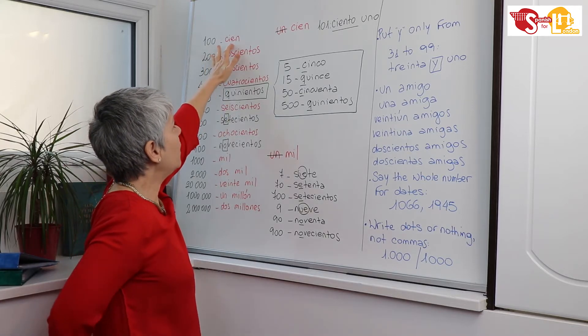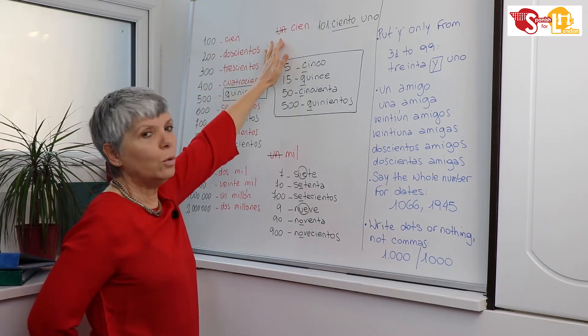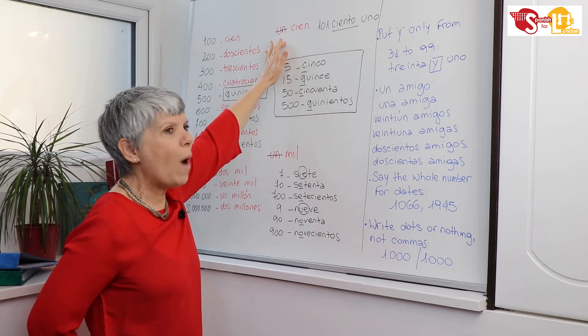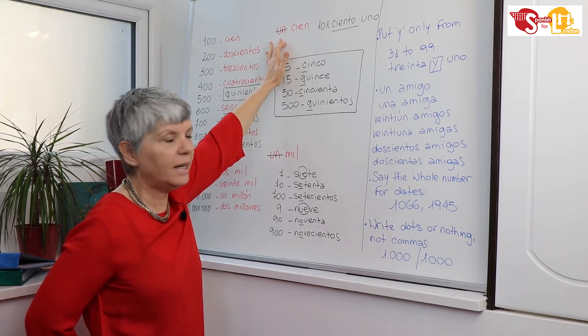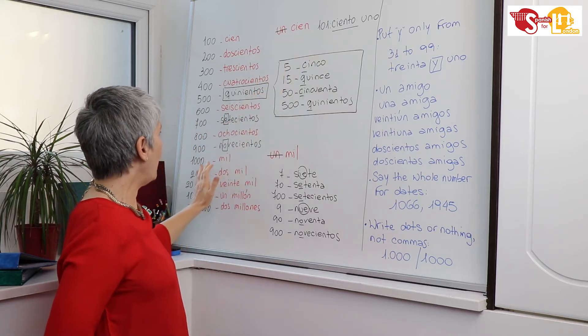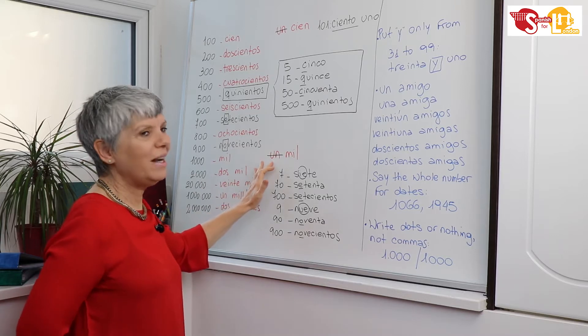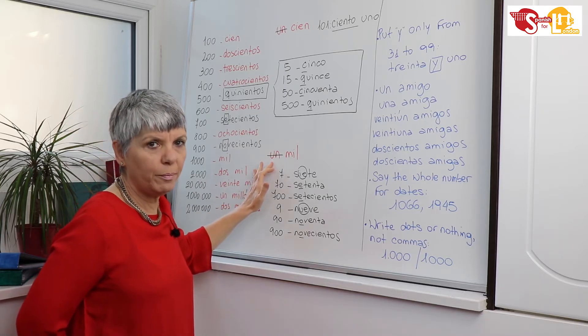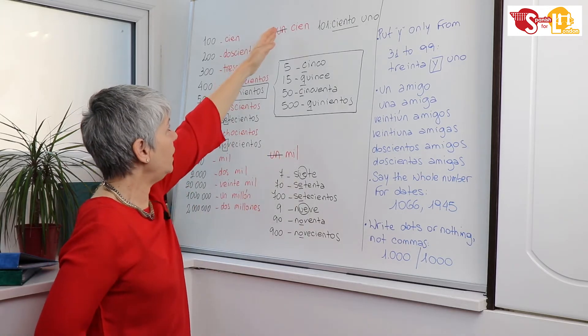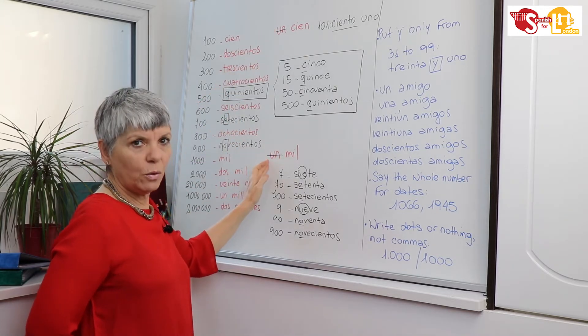100, cien. We never say un cien in Spanish. When you want to say 100, don't say un cien, it's only cien. Same happens with 1000. We don't say un mil, we say only mil. So cien, mil.